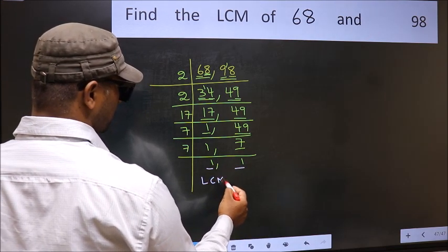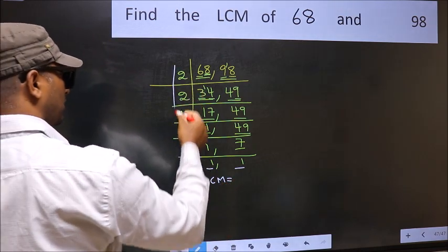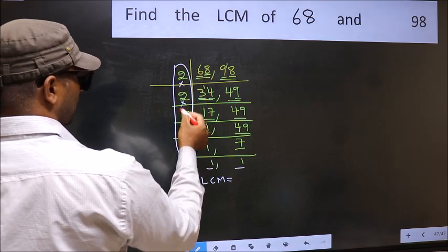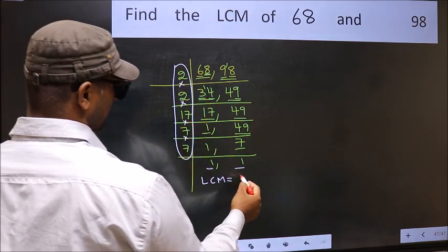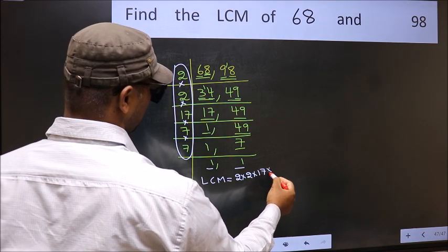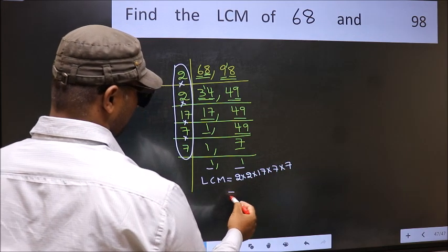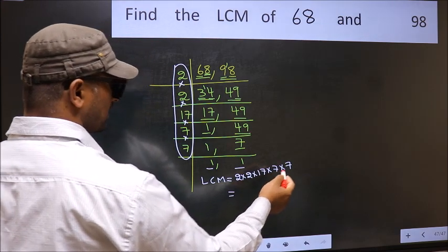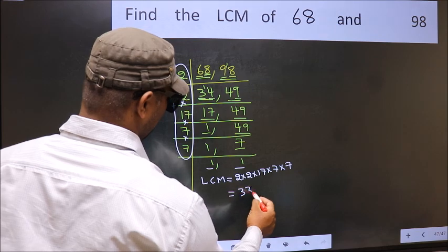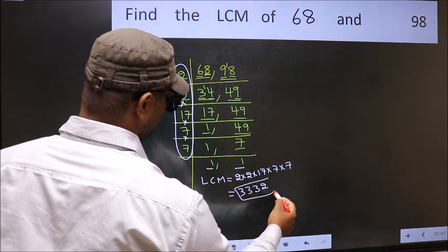So our LCM is the product of these numbers: 2 times 2 times 17 times 7 times 7. When we multiply these numbers, we get 3332 as our LCM.